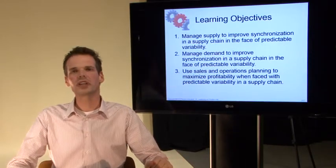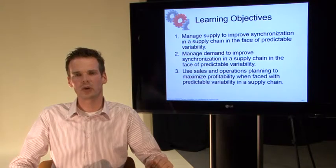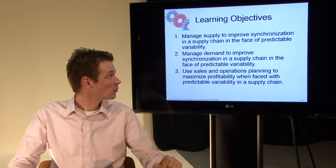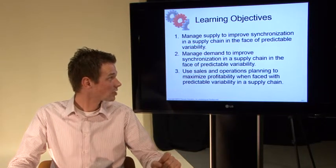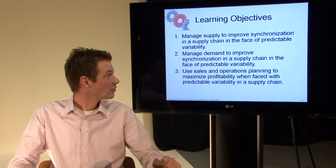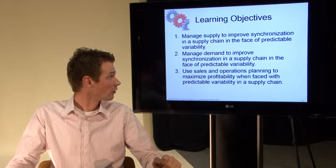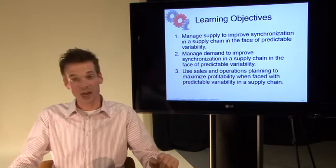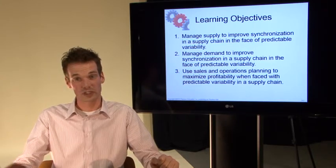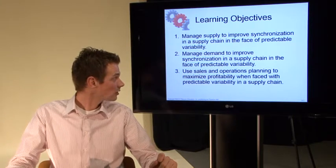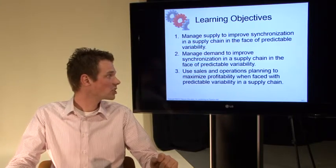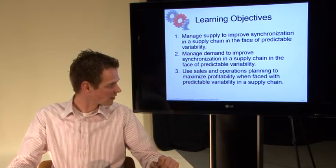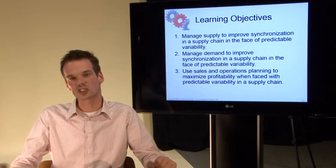So what are we going to learn in the coming videos? First, how to manage supply to improve synchronization in a supply chain in the face of predictable variability — and the same applies for demand. And lastly, the use of sales and operations planning to maximize profitability when faced with predictable variability in the supply chain.